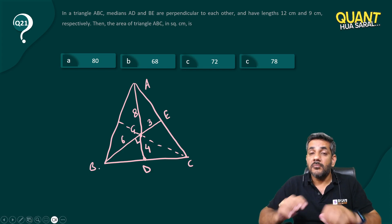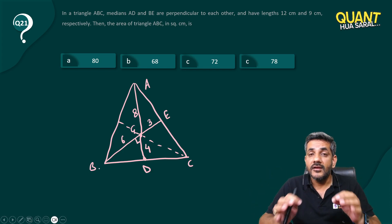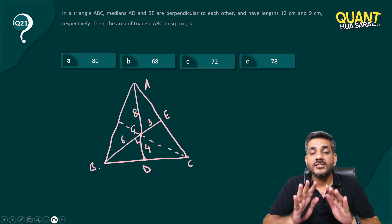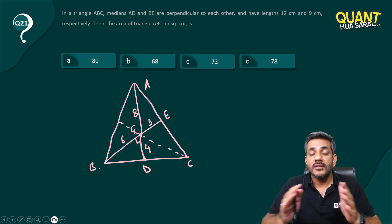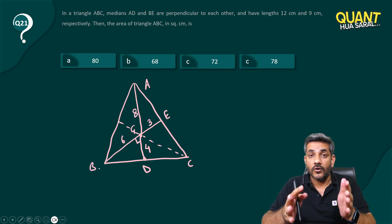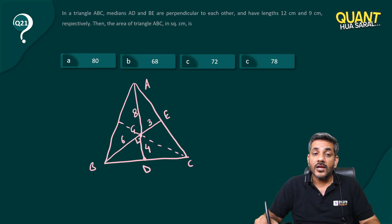But if all three medians are made, your triangle is always divided into six equal parts. That means all the six triangles that are formed, they all have equal areas. Now because they are perpendicular.